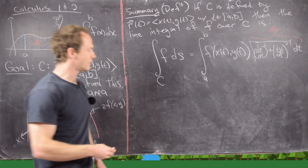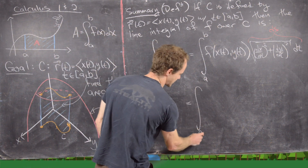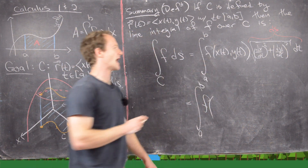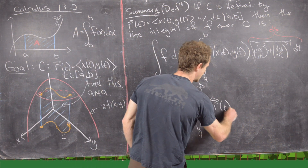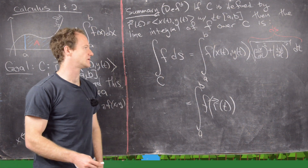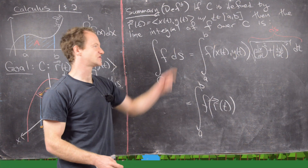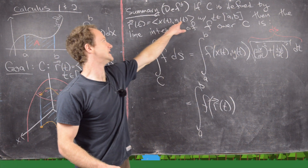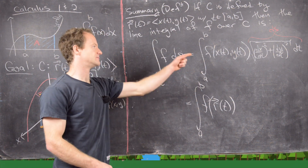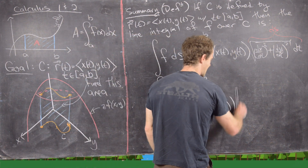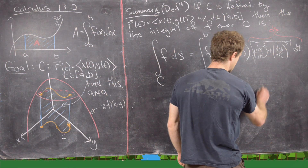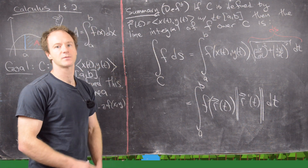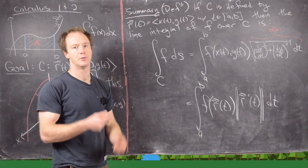There's also a nice vector form: the integral from a to b of f(r(t)) · |r′(t)| dt, where r′(t) = ⟨dx/dt, dy/dt⟩ and |r′(t)| is exactly the square root term. This is a coordinate-free way to write the line integral. We'll be back in future videos to do a bunch of examples of these kinds of problems.